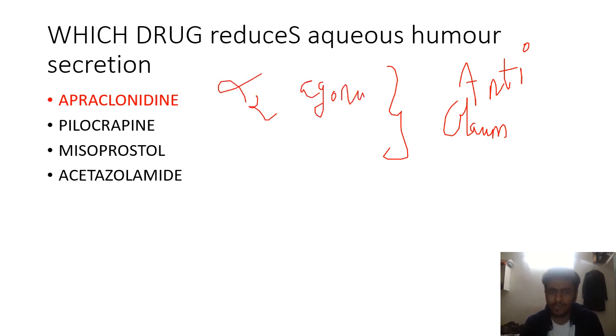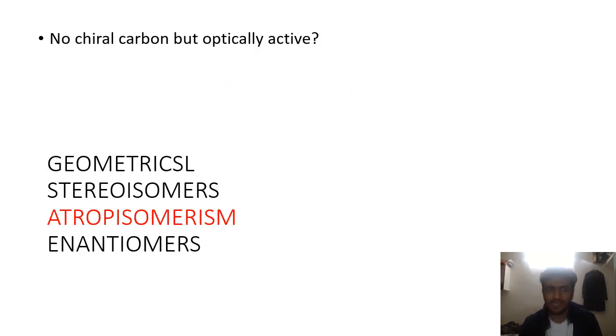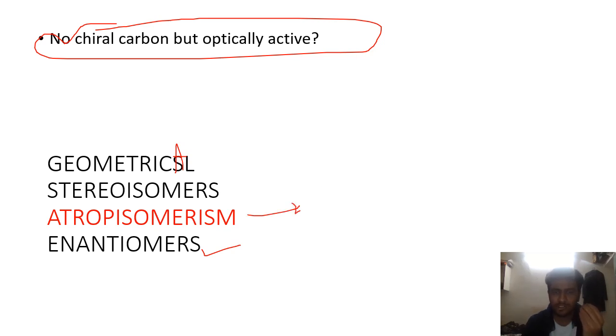Next up, no chiral carbon but optical activity. Enantiomers have a chiral carbon. The main peculiarity of enantiomer is having a chiral carbon. Geometrical isomers have cis-trans, E-Z, syn-anti stereoisomers. Atropoisomerism is shown by biphenyl compounds.